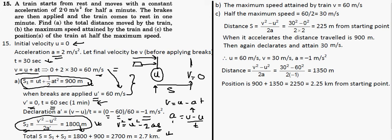The maximum speed attained by the train is the final velocity we already found, which is 60 meters per second. After that point, the brakes are applied and the velocity starts decreasing.